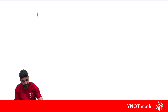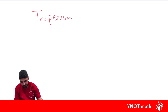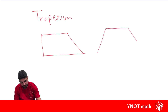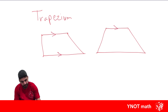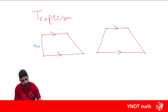Our last quadrilateral is a trapezium. The trapezium might look like this, or it might look like this. The trapezium only has one pair of sides that are parallel to each other. To find the area of a trapezium we need to know the distance between the parallel sides and the length of the parallel sides.